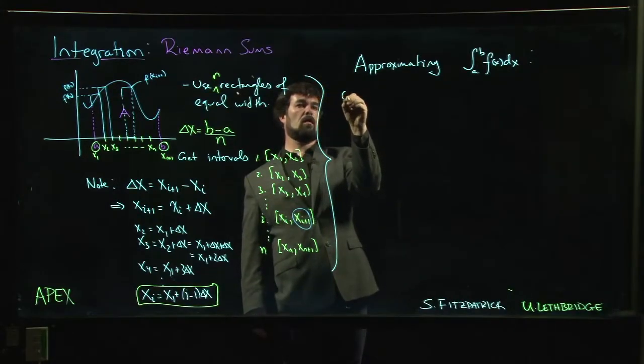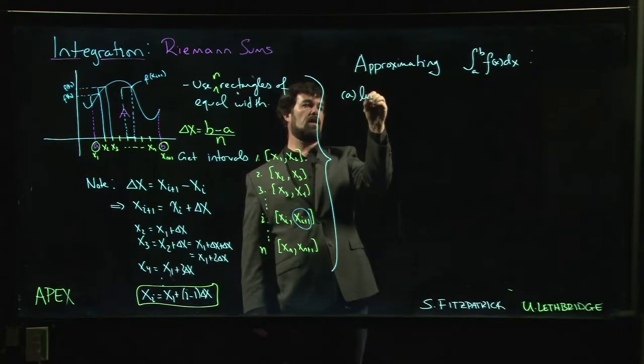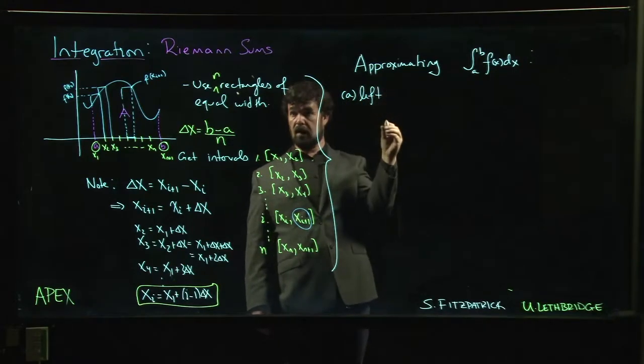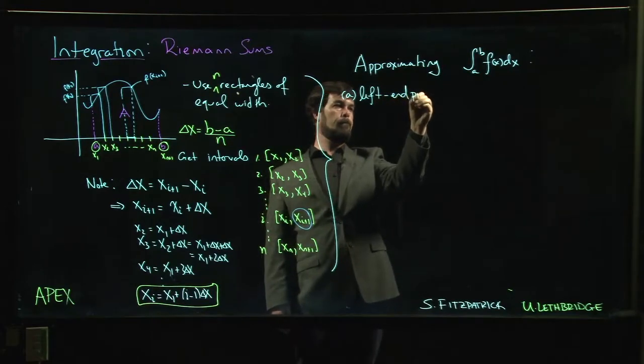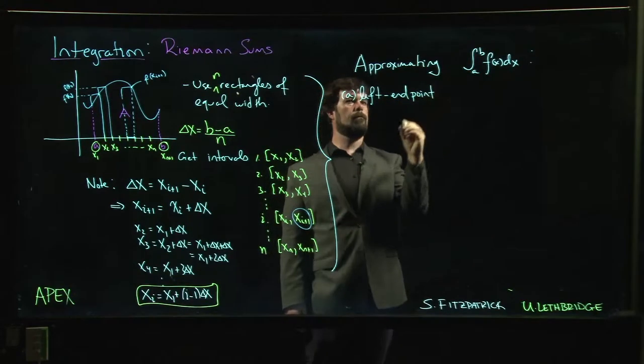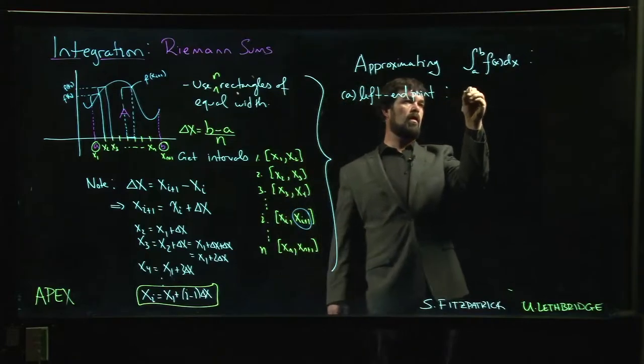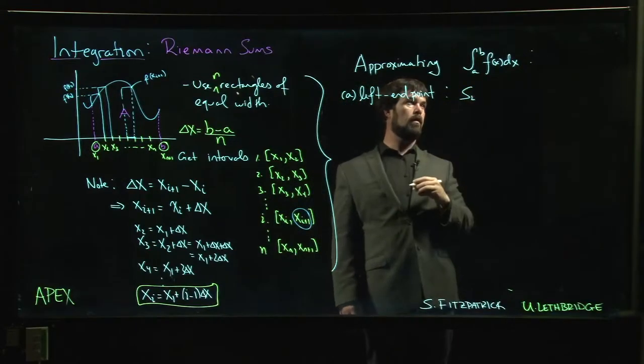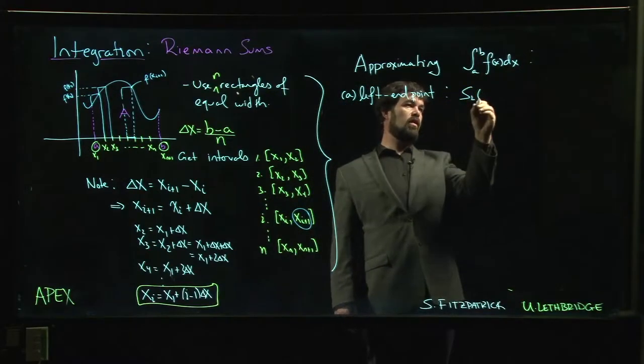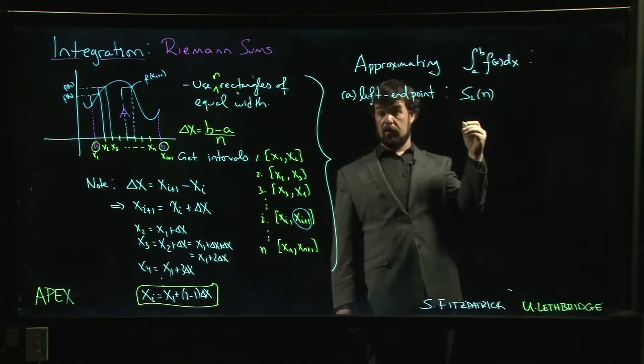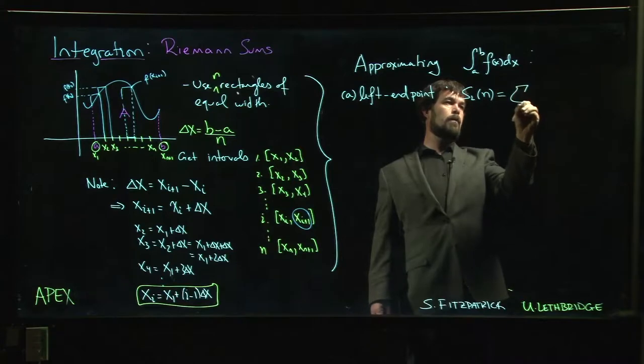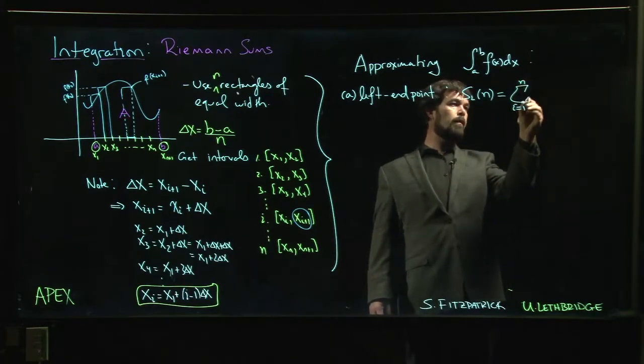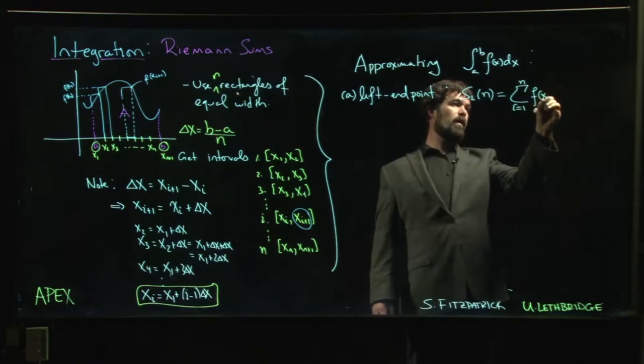Okay, so the three options that you might see are a left endpoint sum, so maybe we call that S_L, which is going to depend on the number of rectangles and that's going to be the sum i going from 1 to n, f of x_i times delta x.